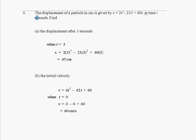In this question we've got the displacement of a particle as a function. To find the displacement after three seconds, we just substitute it in. So where is the particle after three seconds? It's 45 centimeters to the right of the origin.